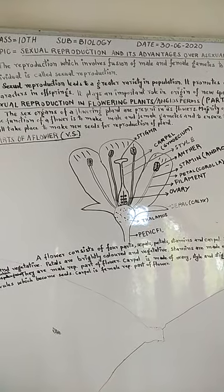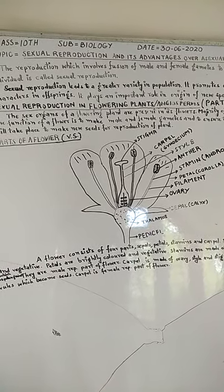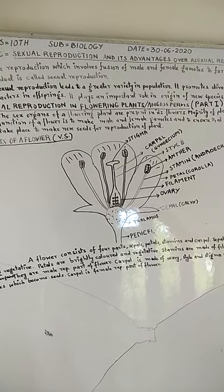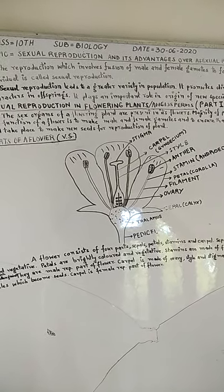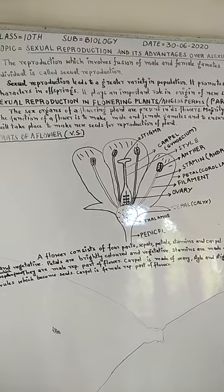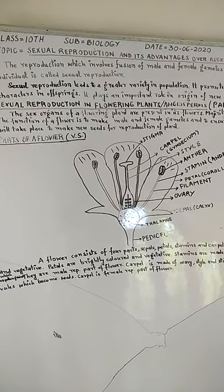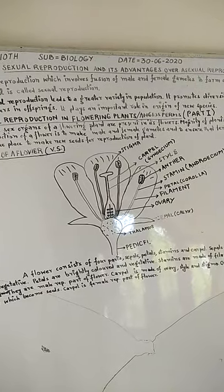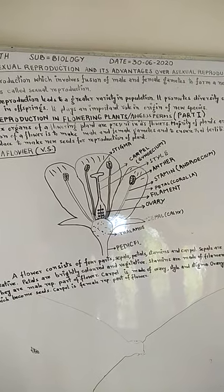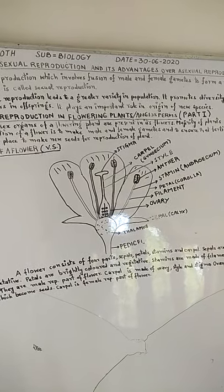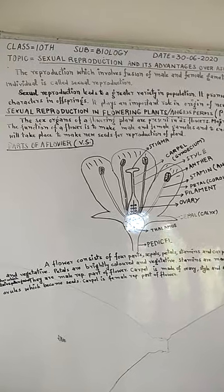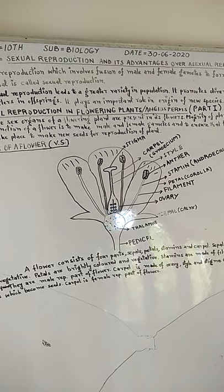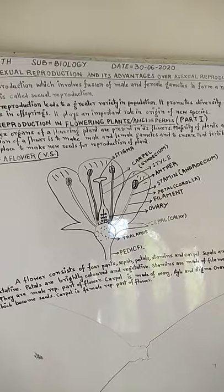We have to know what are the advantages of sexual reproduction over asexual reproduction. Sexual reproduction leads to a greater variety in population. It promotes diversity of characters in offspring. It plays an important role in the origin of new species.